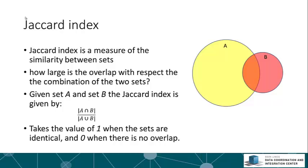So far we've examined statistical tests for the over-representation of categories in a gene set. This kind of leads us on to looking at measures of the relationships between sets of genes.